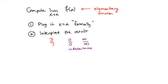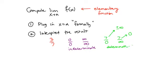In Calc 1, these indeterminate forms told us we couldn't detect the limit and needed to rewrite the function. Other times we'd get expressions like 7 over 0 or 7 over infinity—neither is a real number. But we could interpret them: 7 over infinity we interpreted as 0, since a fixed number over an increasingly large number becomes infinitely small. 7 over 0 meant the function was becoming very large—we were at a vertical asymptote. These are known as determinant forms.